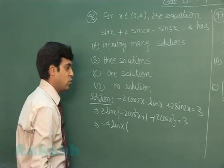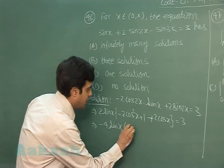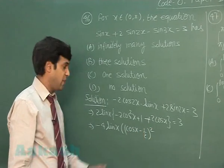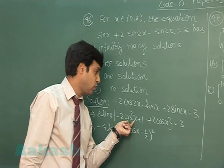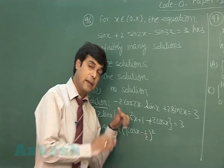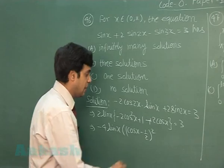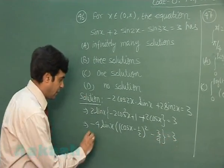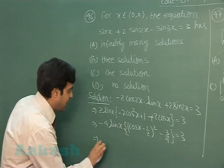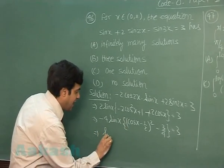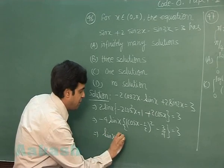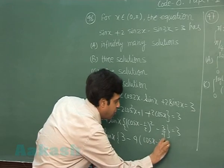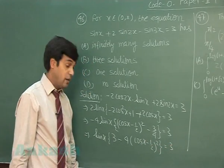Converting to a perfect square by taking −2 common gives (cosx − 1/2)² because we have taken −2 common; we are left with cos²x − cosx + 1/4 − 1/4 − 3/4 = 3. So this can be written as sinx · sinx · sinx · [3 − 4(cosx − 1/2)²] = 3.